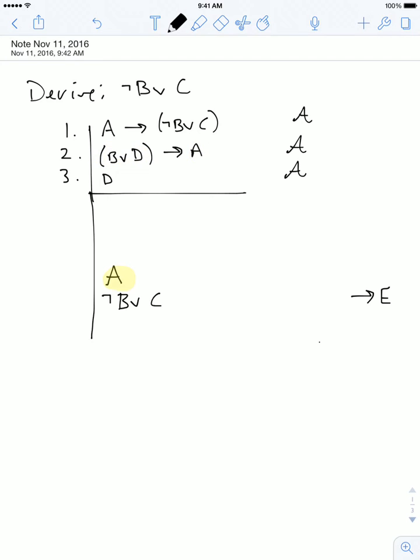And so we can get A from line two and some other line if we had the antecedent of this material conditional. So in other words, if we had the sentence B or D, then we could derive the sentence A from this line B or D here and this conditional.